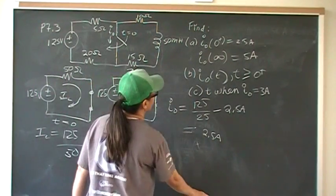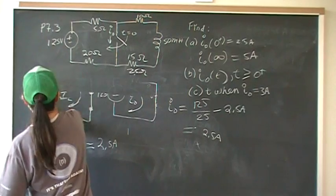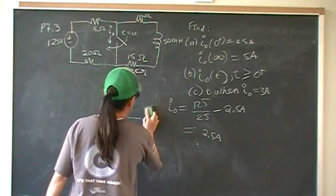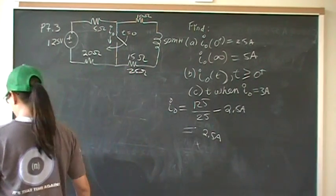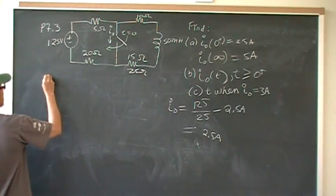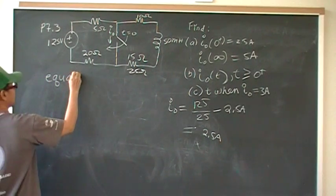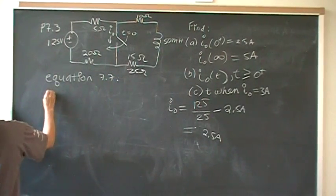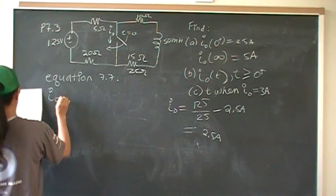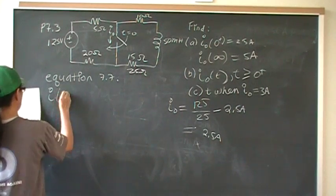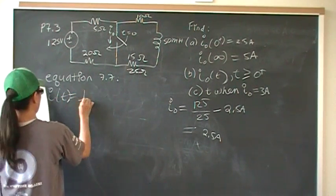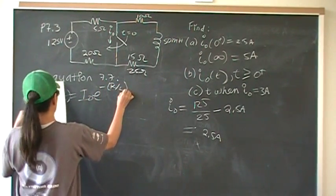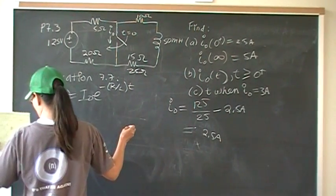So the general equation, for the general equation, you will use, from chapter 7, the general equation for equation 7.7. So this is from your test equation 7.7. And that says that I of T is going to be initial current E to the negative R over L T amps.